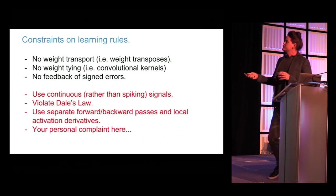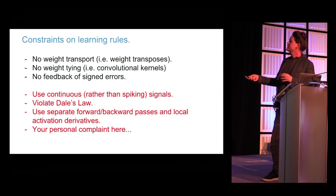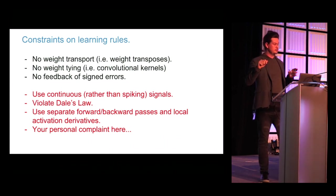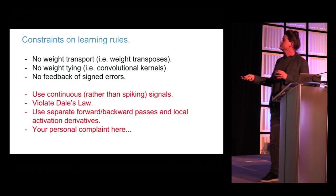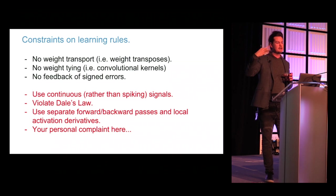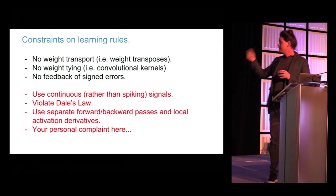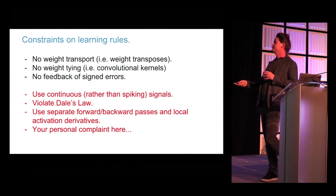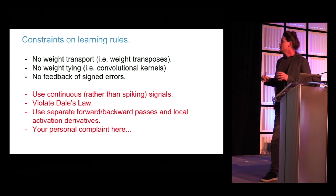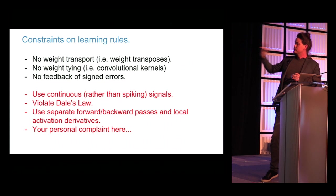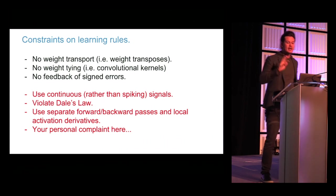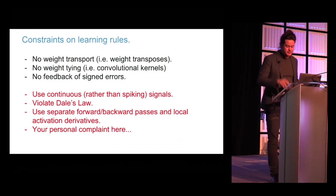In particular, we're going to look at an algorithm with no weight transport — it doesn't use weight transposes, no weight tying, so we do away with convolutional kernels and use only local connections, and no feedback of signed errors. Instead, the only thing sent around the network are unsigned activities. We do use continuous rather than spiking signals, we violate Dale's law, and we use separate forward and backward passes with local activation derivatives.